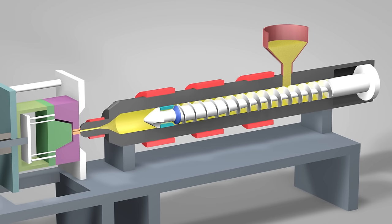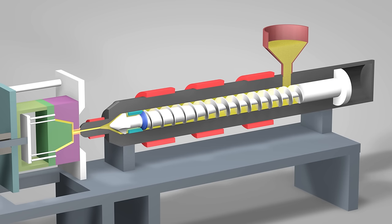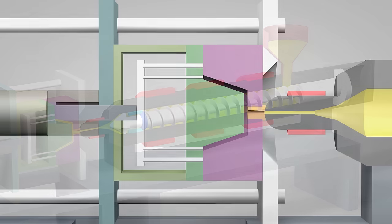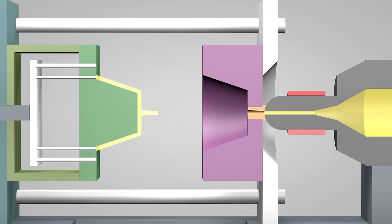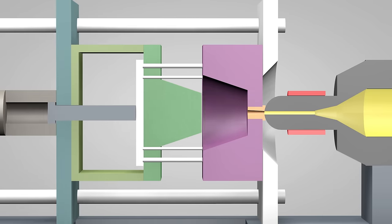Once enough molten plastic is in front of the screw, it ramps forward like the plunger of a syringe. In a matter of seconds, the screw injects the molten plastic into the empty part of the mold called the cavity image. The plastic solidifies in under a minute. The mold opens and the part is ejected. The mold then closes and the process repeats.